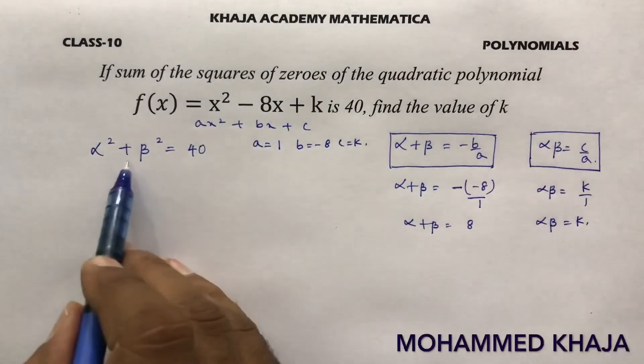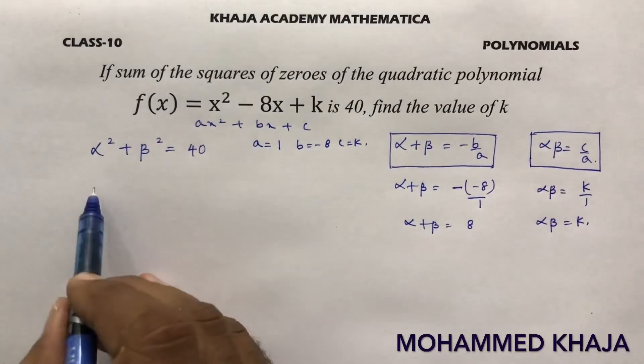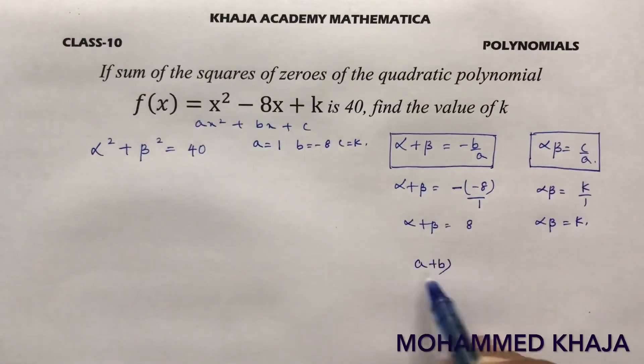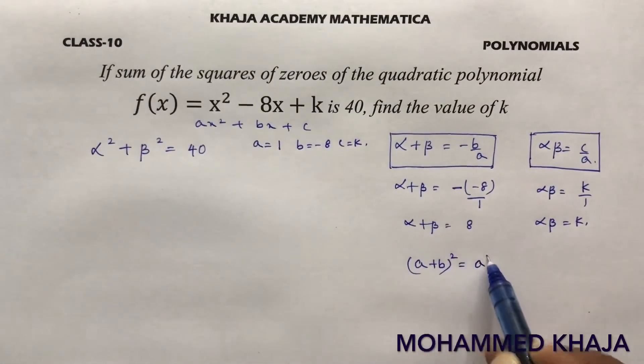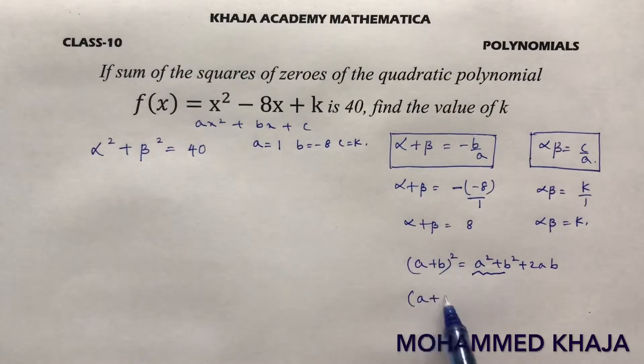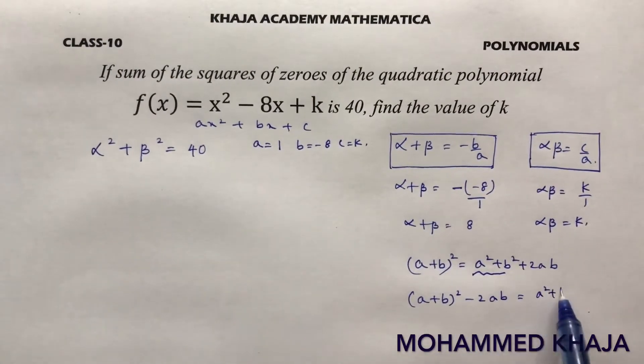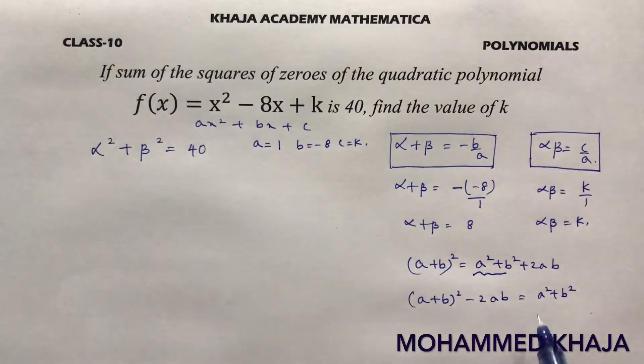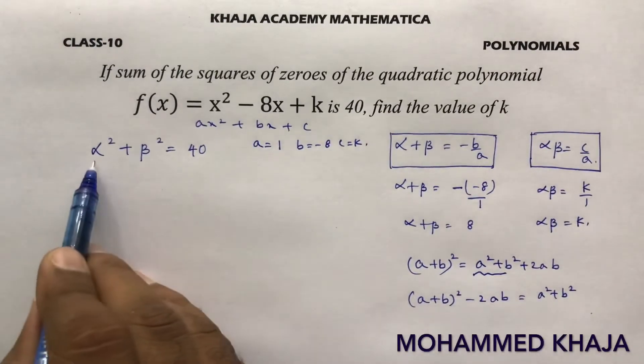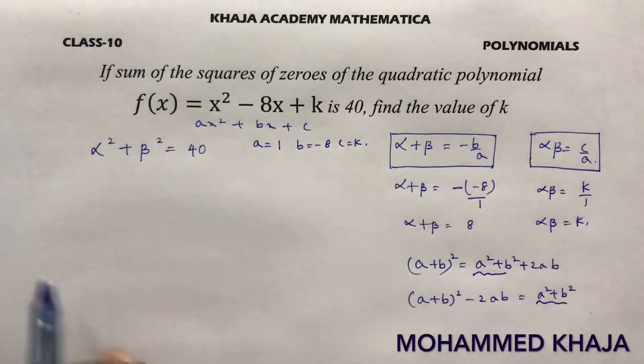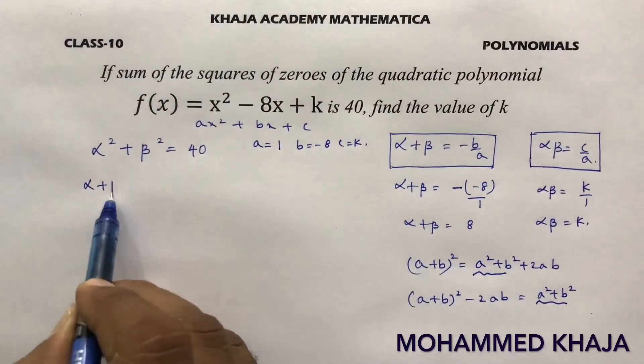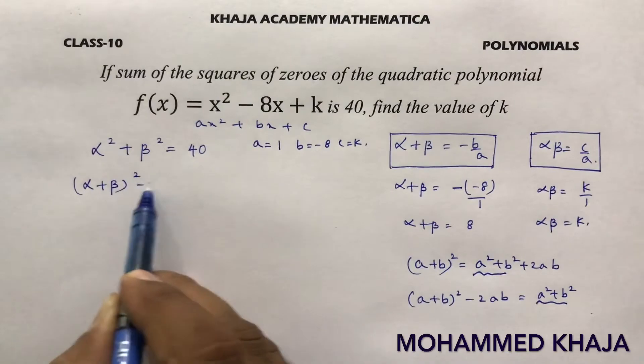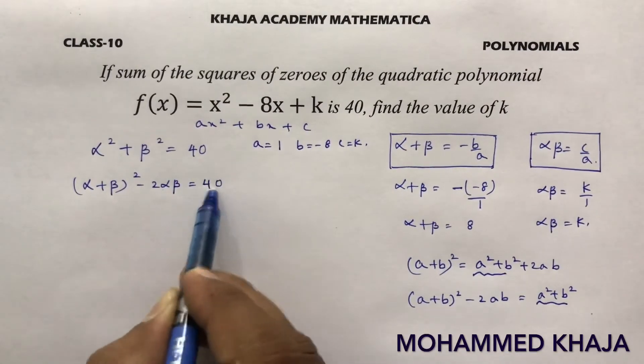Now see this alpha² + beta², I can write it like for example, (a + b)² is a² + b² + 2ab. So what is a² + b²? (a + b)² - 2ab is a² + b². So this formula alpha² + beta² is nothing but (alpha + beta)² - 2(alpha * beta) = 40.